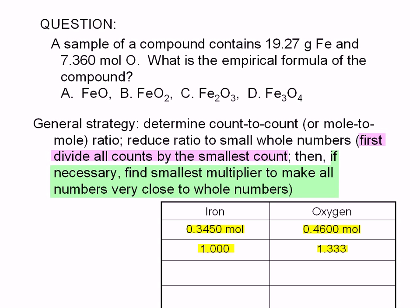Try 2. If that doesn't work, try 3, and then 4, and so on. Okay, let's try multiplying both numbers by 2. 1.000 times 2 equals 2.000, and 1.333 times 2 equals 2.666. 2.666 is still too far from a whole number.